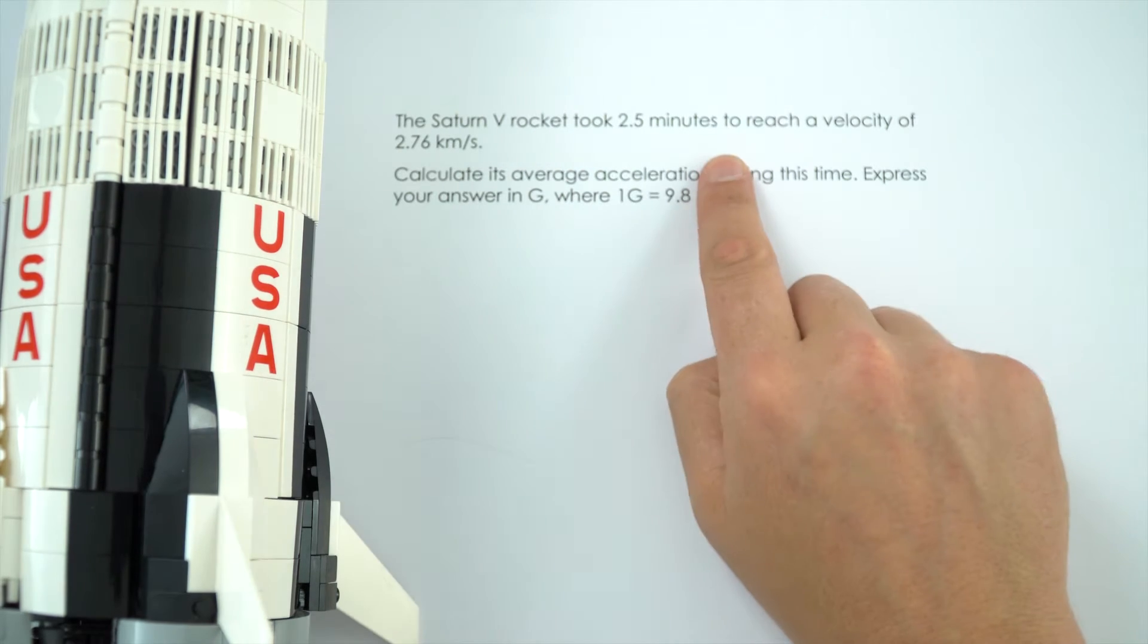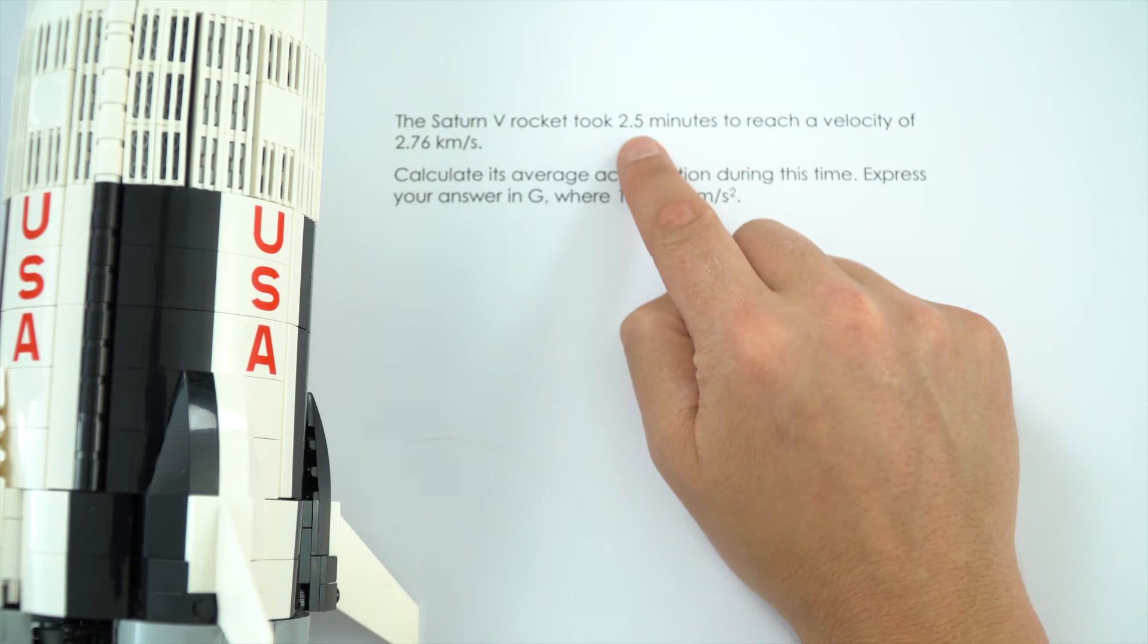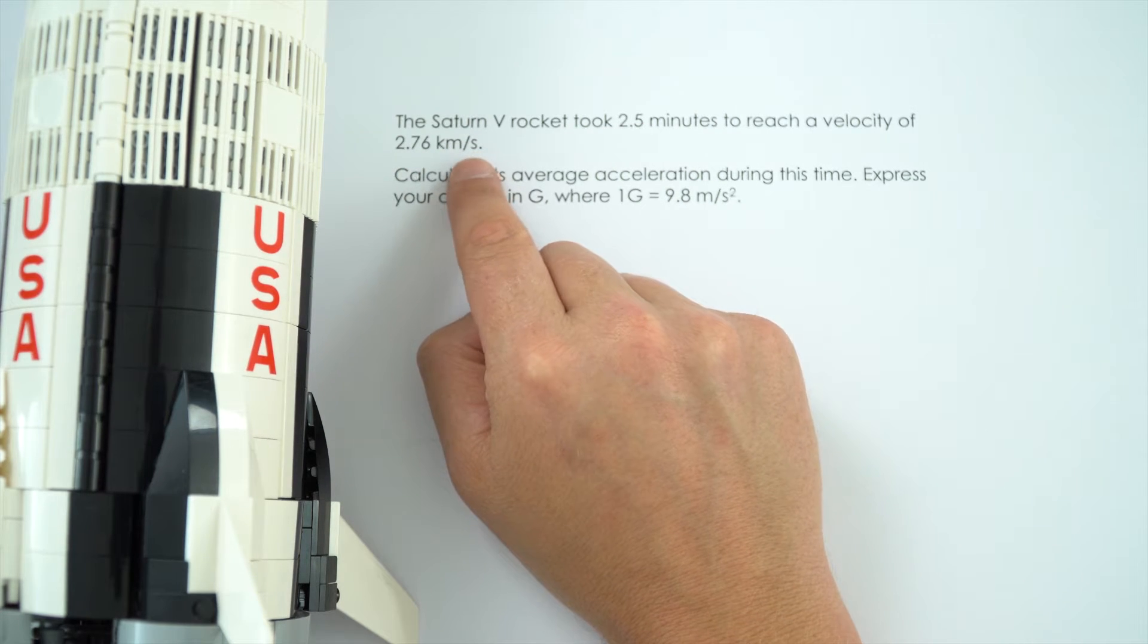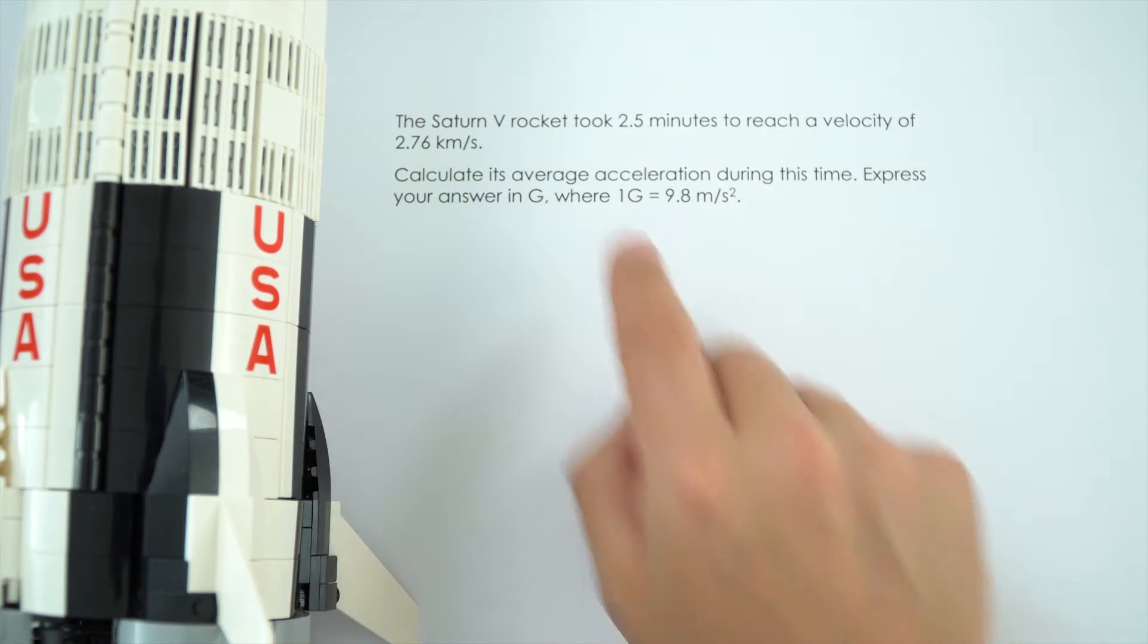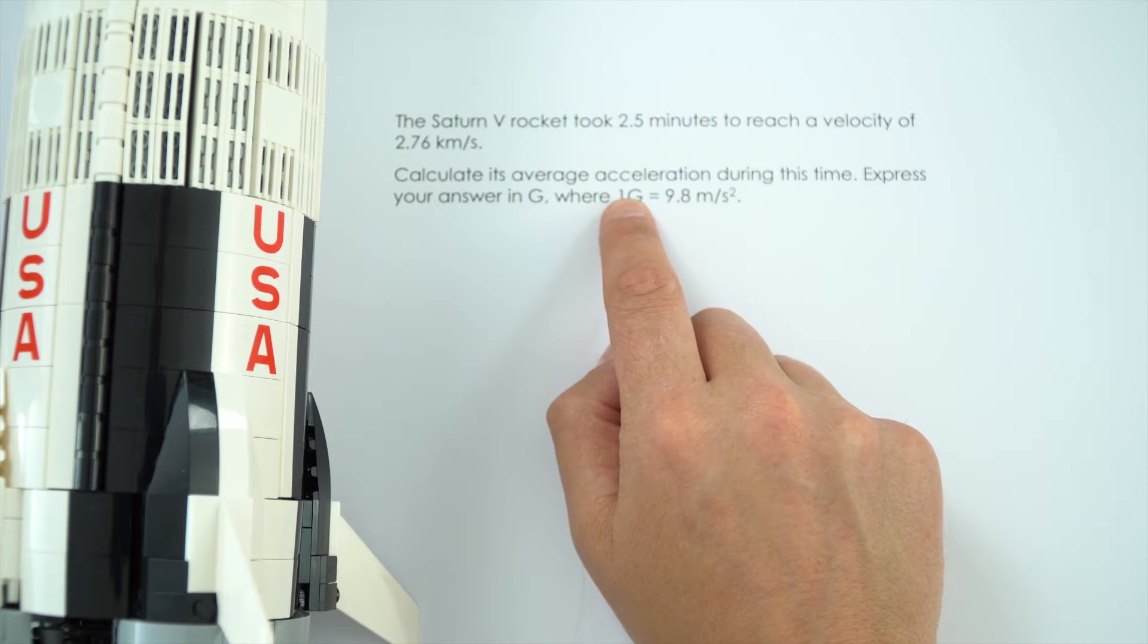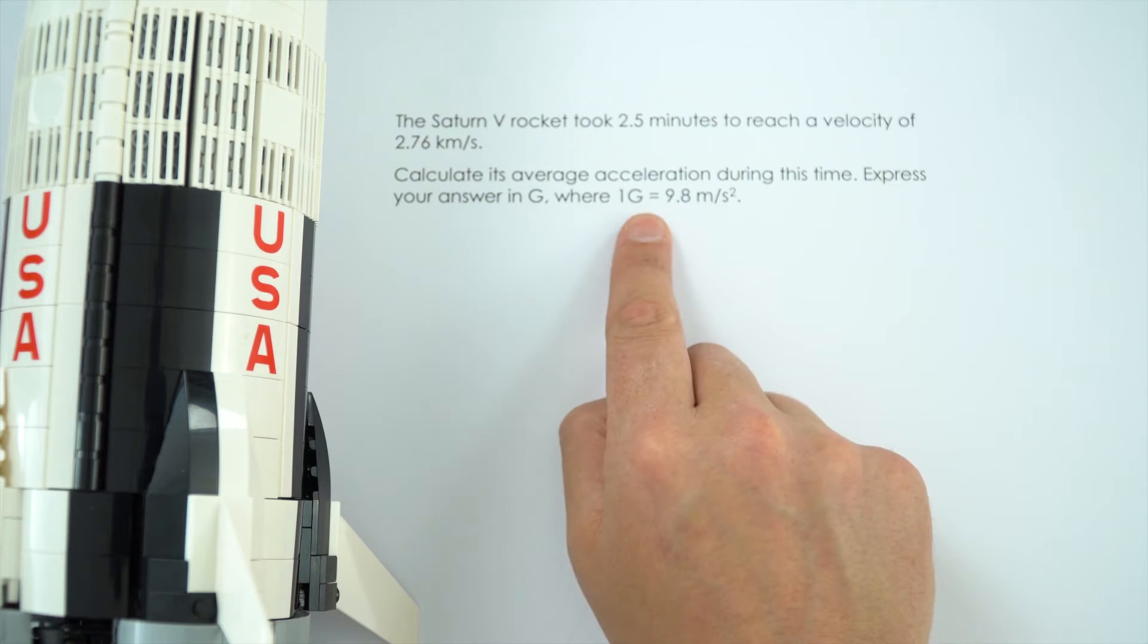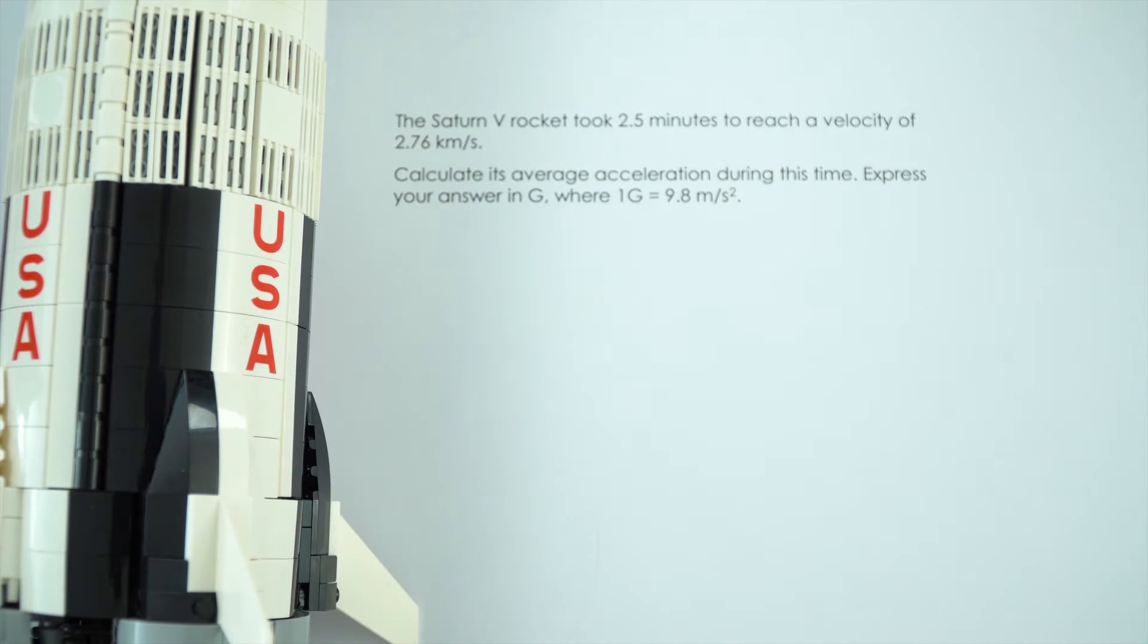But anyway, we've got some information here and it said it took two and a half minutes to reach a velocity of 2.76 kilometres per second, which is incredibly quick, and we want to calculate its average acceleration during this time and we're going to express our answer in g where 1g is 9.8 metres per second squared.